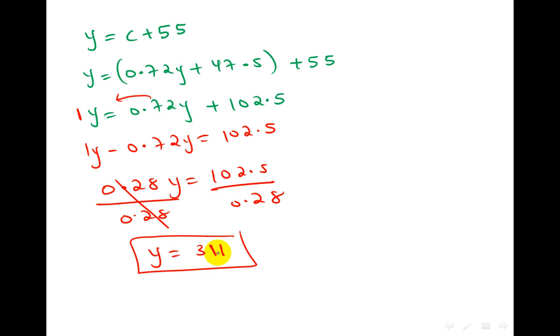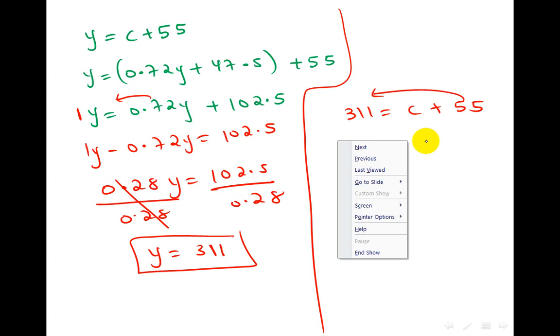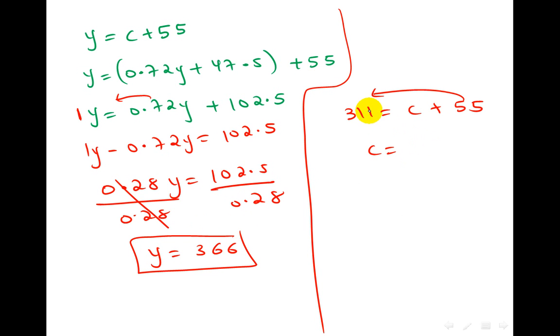Of course, this value is rounded to 311. I'm sorry, when you divide this, you'll get 366. I'm really sorry for that. It's just a matter of using your calculator, 366. So if you bring this one back, C would be 366 minus 55, which would give you C equals 311. So that will be our national income equilibrium, where the income will be 366 and the consumption will be 311.